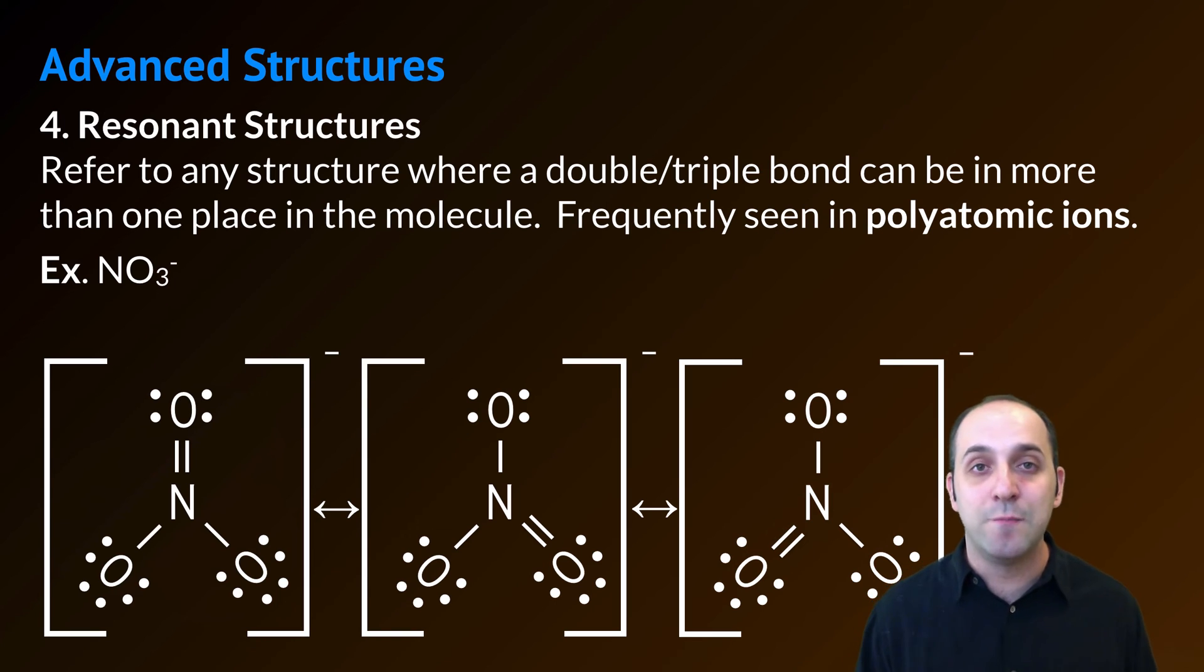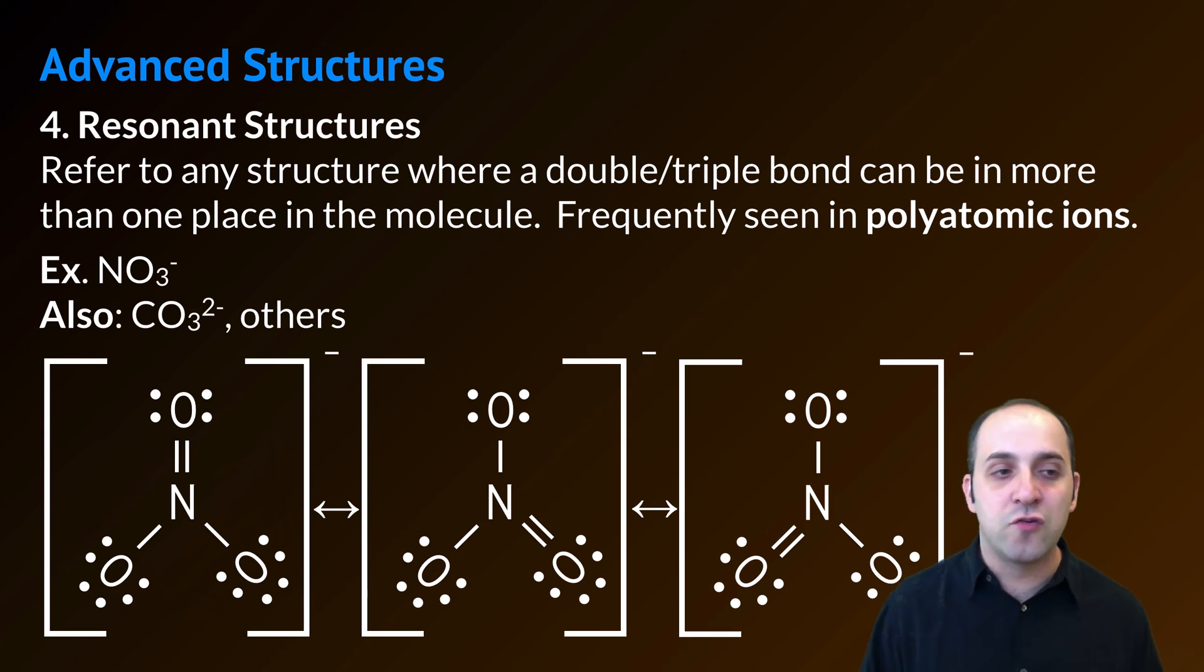Since we can't really show that easily in a Lewis structure, the convention is just to write all the possibilities where that can go and connect them with this double-sided arrow. You'll see this in other polyatomic ion structures as well. Carbonate is a good example and there are certainly many others. Do you have any questions about resonant structures? If you do, write them down and then when you're ready, let's wrap up.